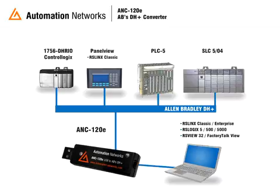Welcome to this Automation Networks video. The ANC120E is an economical and high performance USB to Data Highway Plus converter, interfacing major HMI, SCADA, and PLC programming packages to devices on DH+. It is an alternative to Allen Bradley's 1784-U2 DHP at a more affordable price, efficiently engineered to function at 12 megabits USB speed and Data Highway Plus communications up to 230.4 kB.